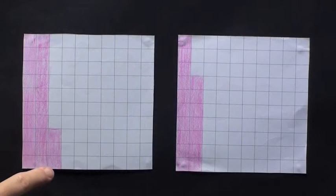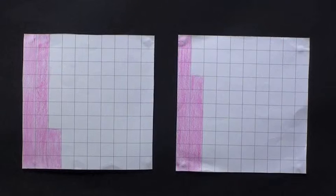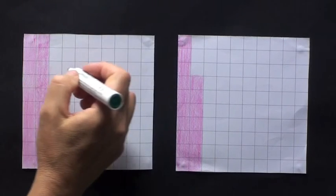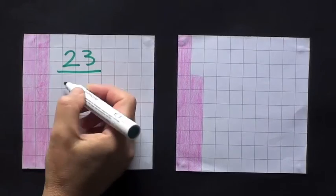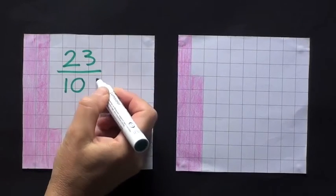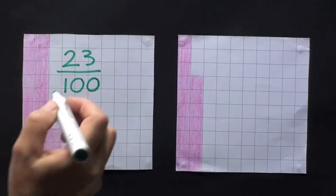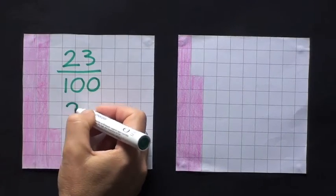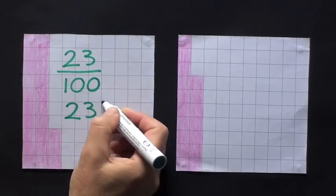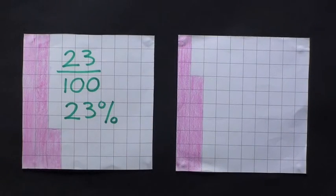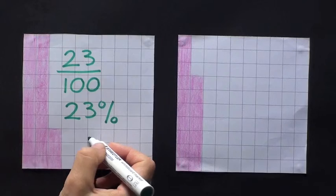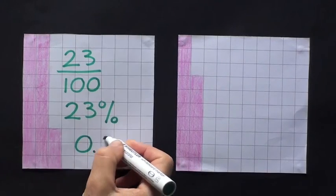Here I have 23 parts out of 100 shaded in. So I can write the fraction, my common fraction, as 23 parts out of 100, or 23 hundredths. My percentage is 23% because percentage simply means how much out of 100. And to write it as a decimal, it is 0.23.